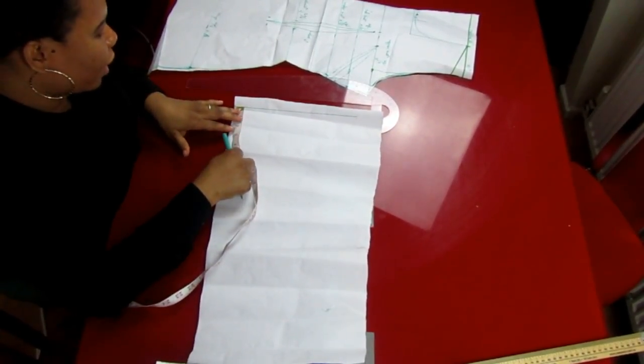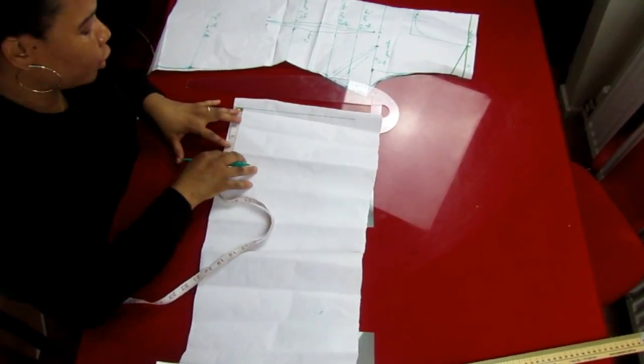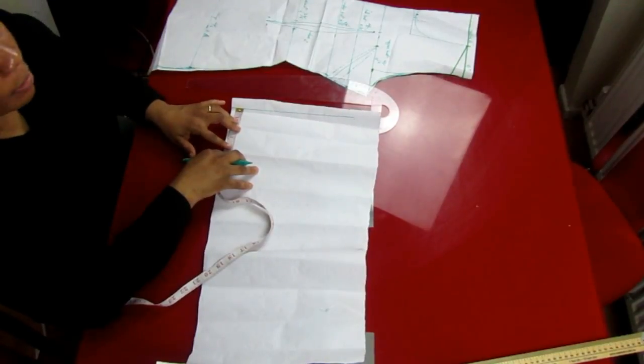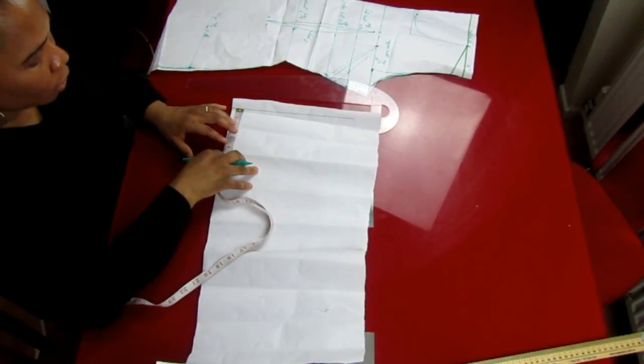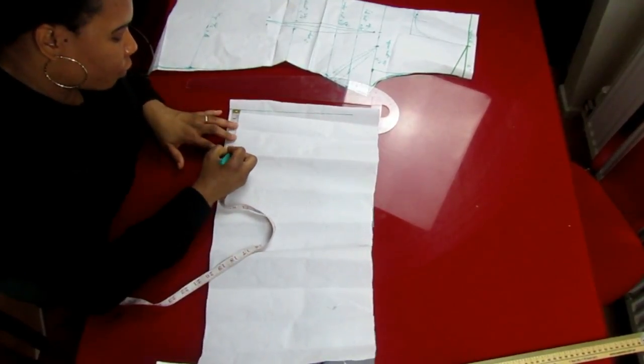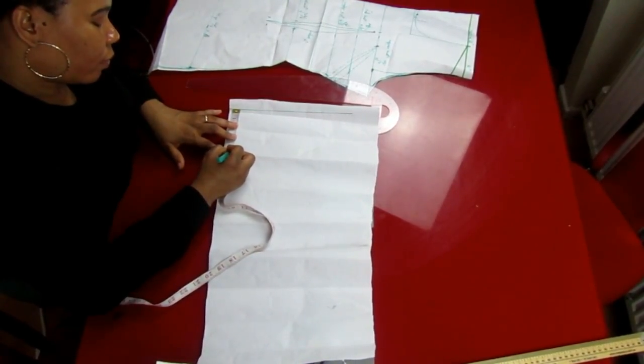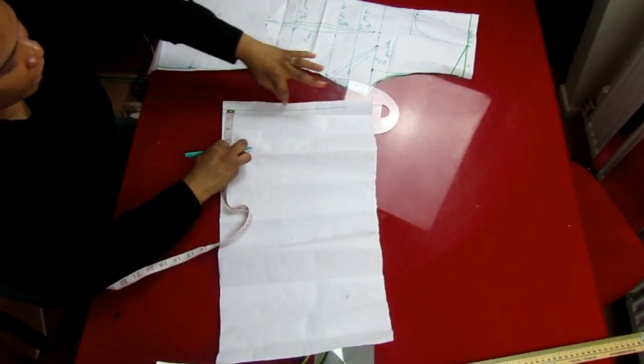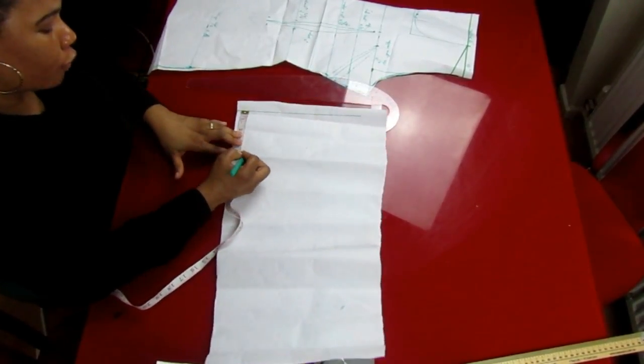So from here I'll take 4 inches. Yours might be different, but mine is 4 inches. So after dividing the bust measurement by 12, you add half an inch to it. So here you mark, and you place a dot here. 4 inches from here, you place a line. So you make a dot 4 inches, dot here.